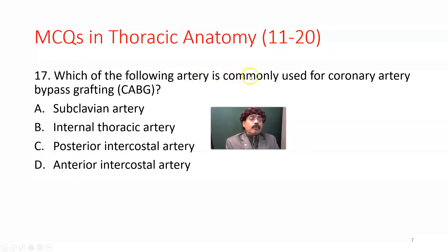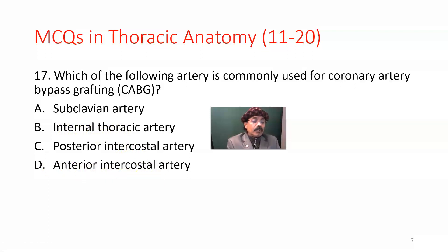Question number 17. Which of the following arteries is commonly used for coronary artery bypass grafting? Options are subclavian artery, internal thoracic artery, posterior intercostal artery, and anterior intercostal artery. The answer should be internal thoracic artery. We may sometimes need multiple grafts and use two internal thoracic arteries. If not available, we may use the great saphenous vein or even the radial artery, but the primary answer is the internal thoracic artery.